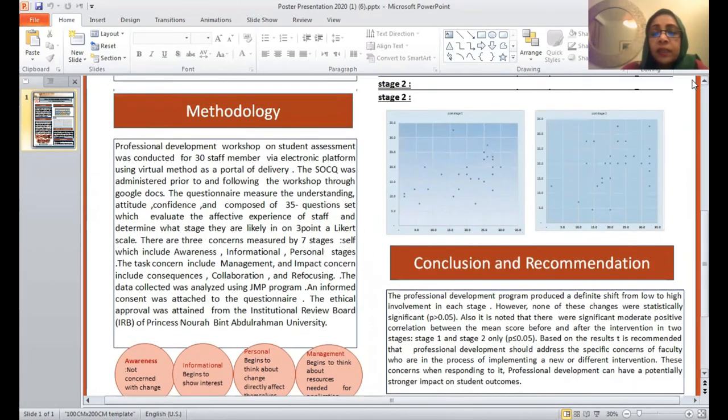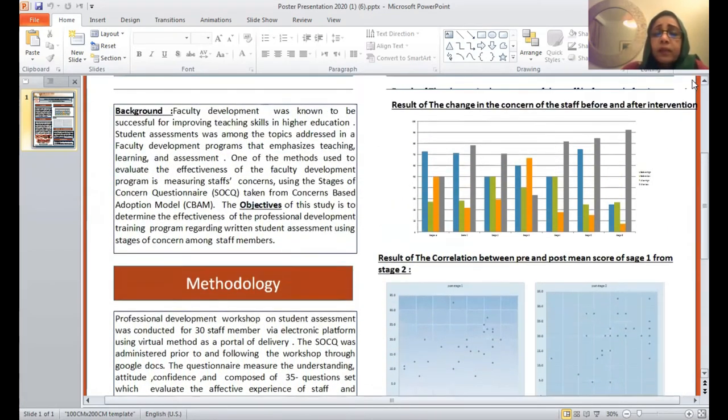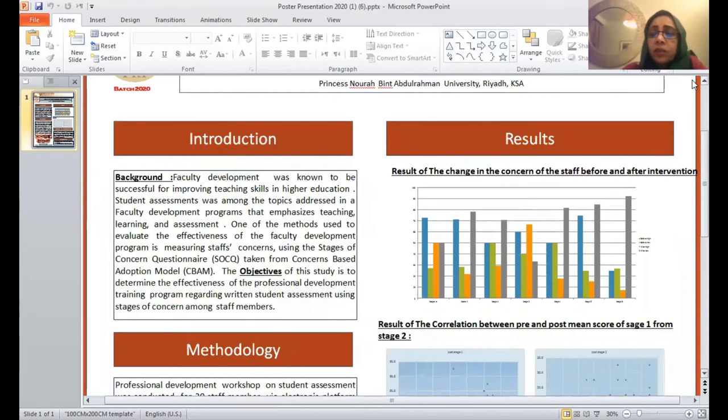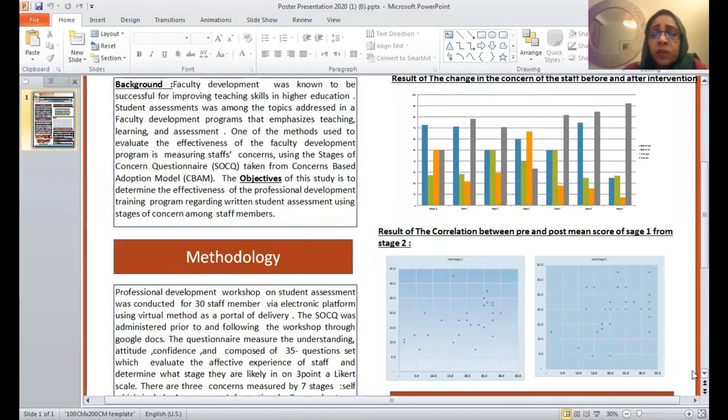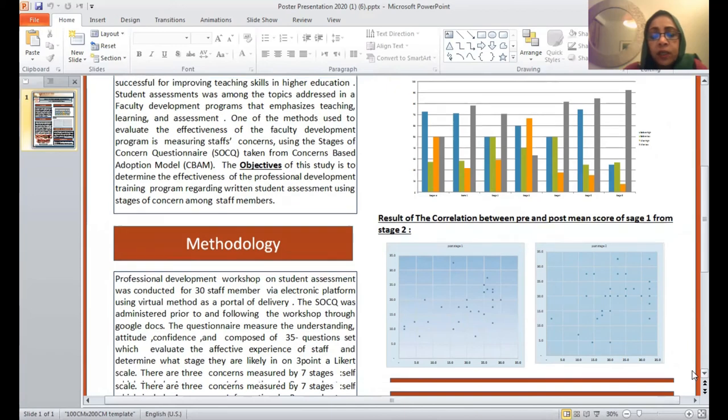Results showed the change in the concern of the staff before and after the intervention. There is a definitive shift from low to high concern in all stages, although none of these stages were statistically significant. The correlation between pre and post mean score of stage one and two are the only stages that show a positive moderate correlation. None of the other stages are correlated.